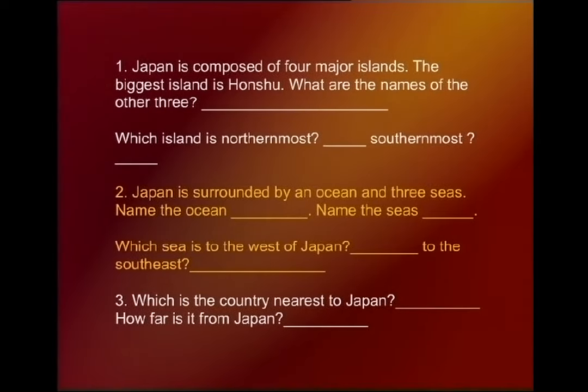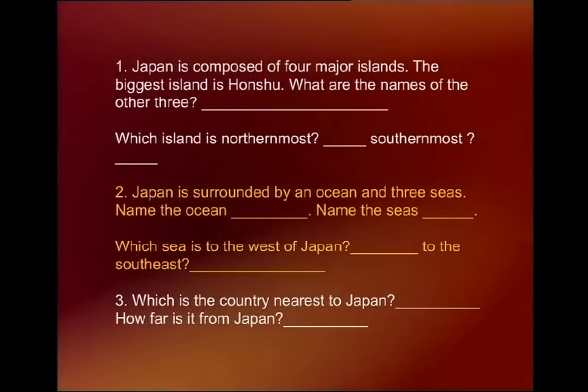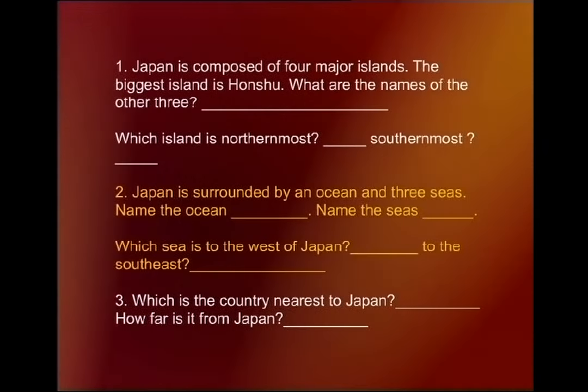Number two: Japan is surrounded by an ocean and three seas — can you name them? There is a large mass of water to the east of Japan: the Pacific Ocean. There are also three seas that surround Japan — the Philippine Sea, the Sea of Japan, and the East China Sea.